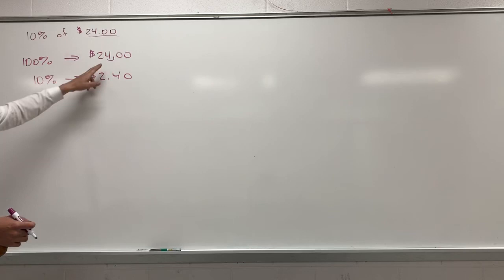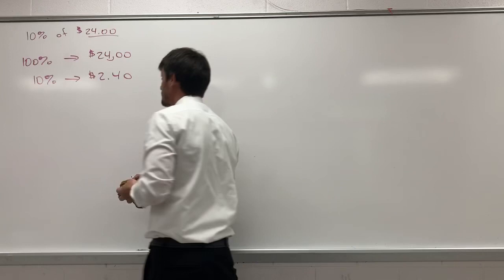So if we take 24 and divide it by 10, that's the same as moving the decimal one place, which is $2.40. Which means that there are 10 $2.40 amounts in $24.